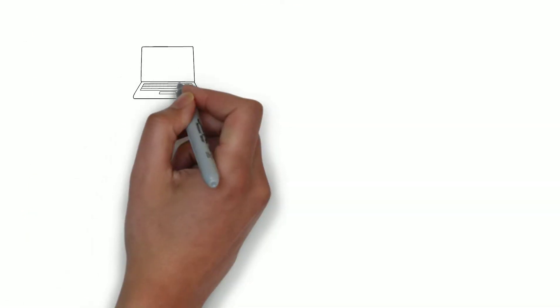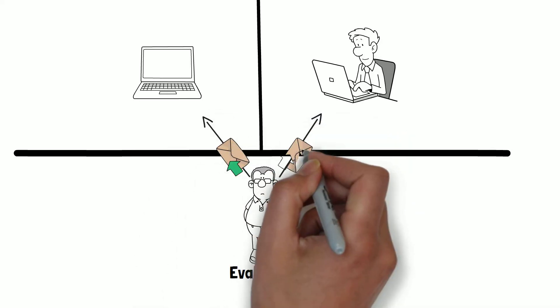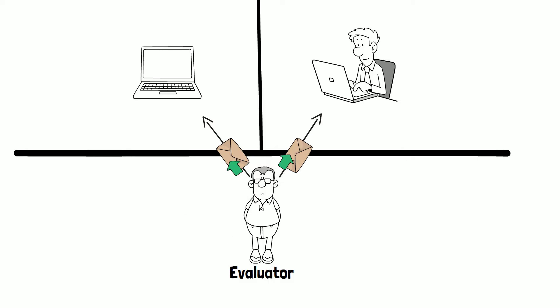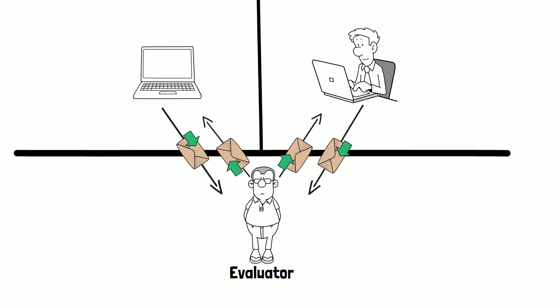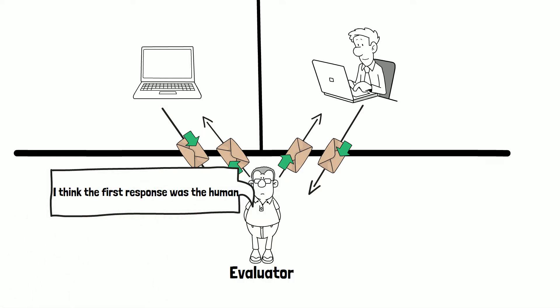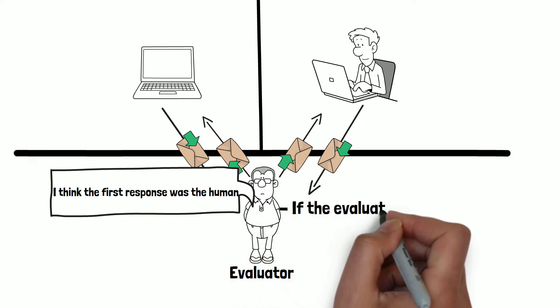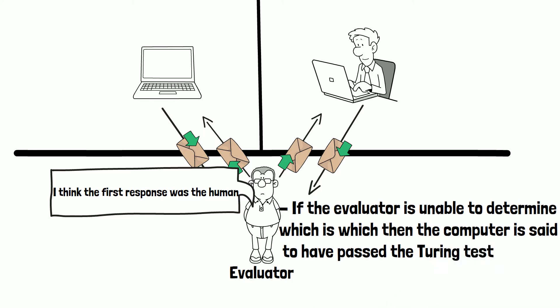The Turing test places a computer with artificial intelligence, known as AI, and a human on one side hidden from a human evaluator on the other side. The evaluator then types questions to both the human and the AI, to which they both respond. The evaluator then has to guess which is the computer and which is the human based on their responses. If the evaluator is unable to determine which is which, then the computer is said to have passed the Turing test.